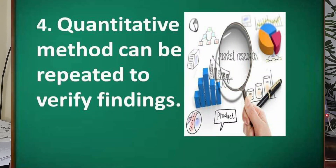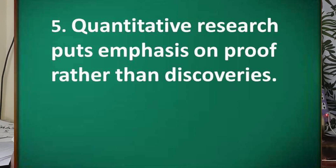Quantitative methods can be repeated to verify findings. It is easier in quantitative research because it is more on survey forms, rather than qualitative research where you have to interview somebody, write it, transcribe it, translate if there's a second language, and then inform them again about what they said. Quantitative research also puts emphasis on proof rather than discoveries. The proof in quantitative research is the numerical data, while qualitative research is more on experiences, discoveries, or observations.